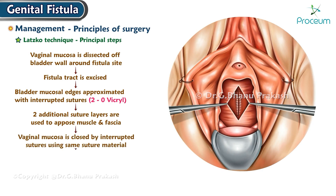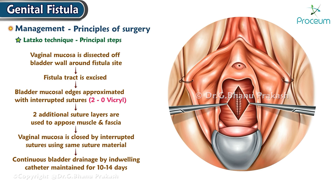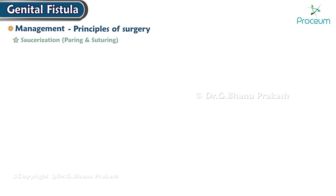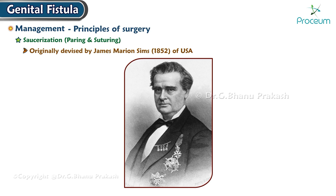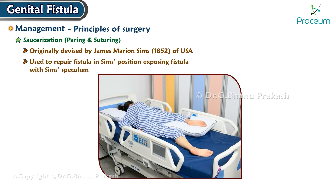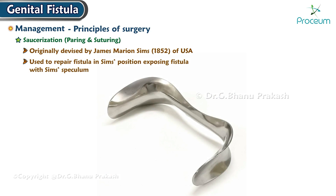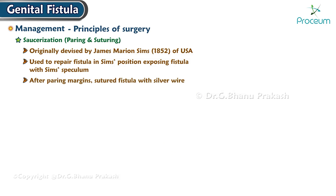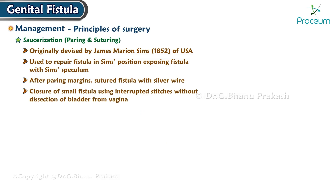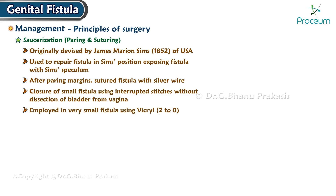Continuous bladder drainage by indwelling catheter is maintained for 10 to 14 days. Saucerization, paring, and suturing: this operation was originally devised by James Marion Sims (1852, USA), used to repair the fistula in Sims position, exposing the fistula with a Sims speculum, paring the margins, and suturing with silver wire. Saucerization is the closure of a small fistula using interrupted stitches without dissection of the bladder from the vagina, employable in very small fistulas using Vicryl 2-0.